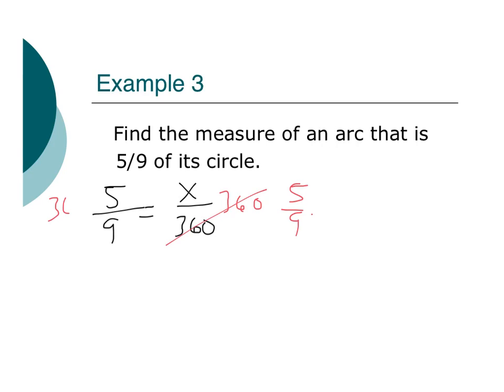So I take 5 ninths and multiply it by 360 on each side. So that cancels. So 5 ninths times 360. Well, let's see, here we get 200, so 200 degrees.